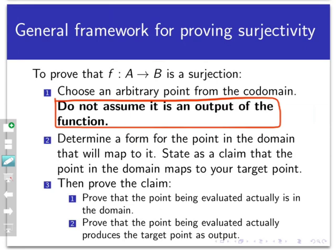Second, we determine a form for the point in the domain that maps to our chosen codomain point. Before doing any proof, we should play with the function — for example, if the codomain is the integers, try hitting 17, then 22, then negative 5. This exploration helps us find a general form for the input. We then state a claim, prove the claimed domain point actually belongs to the domain, and then verify it maps to the target by evaluating the function.